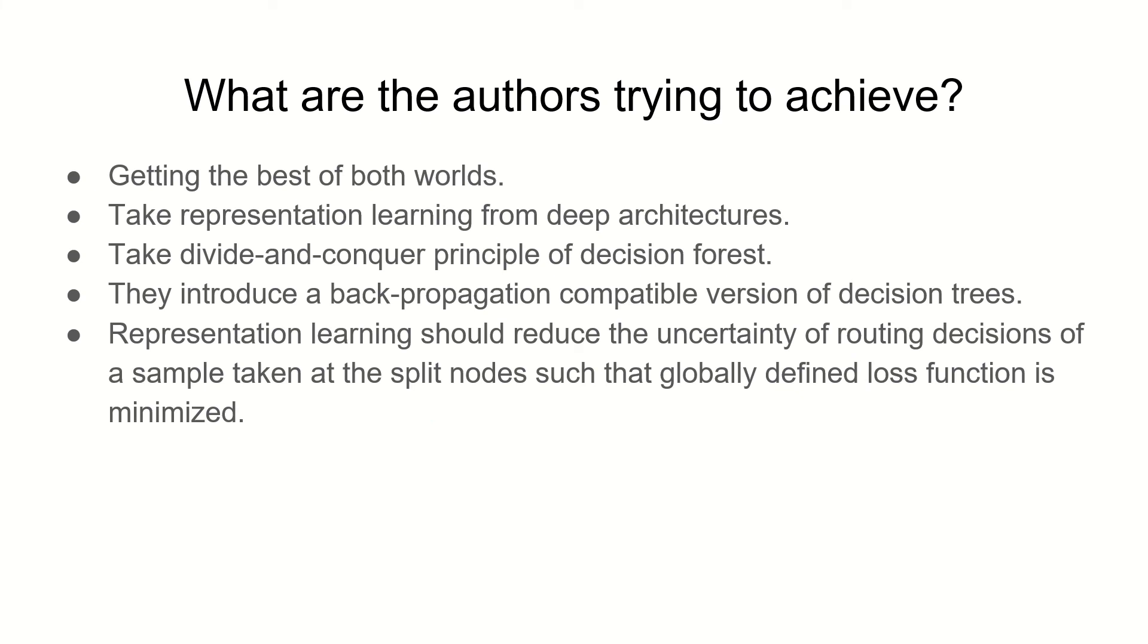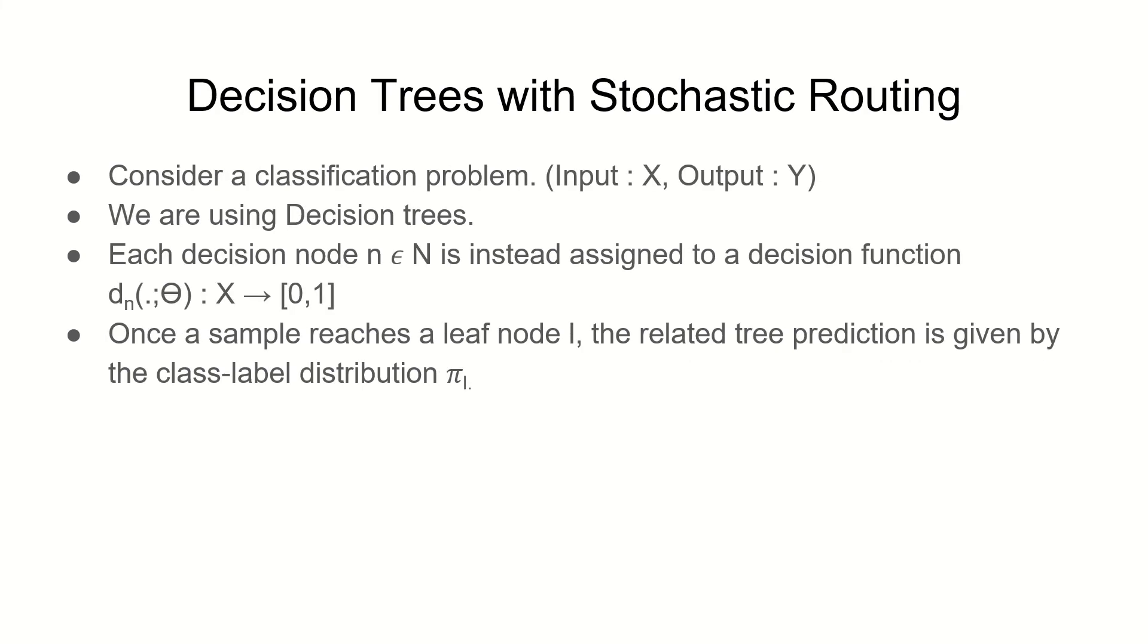What are the authors trying to achieve by combining these two? They're taking representation learning from deep neural networks and divide-and-conquer technique from decision forests, and introducing a back-propagation compatible version of decision trees. By doing this they should be able to reduce the uncertainty of routing decisions of a sample taken at an internal node.